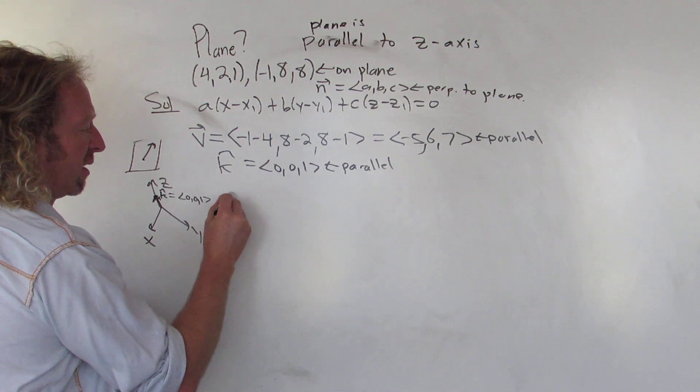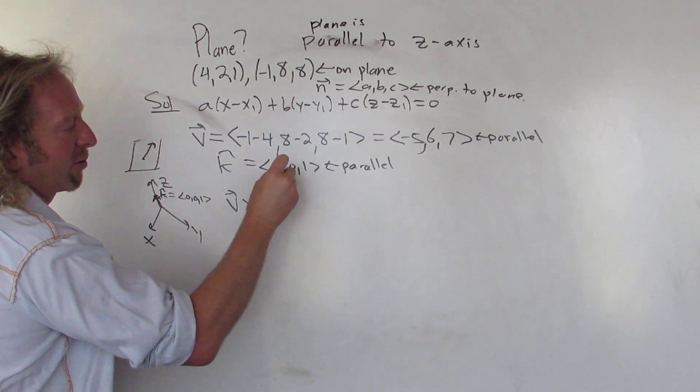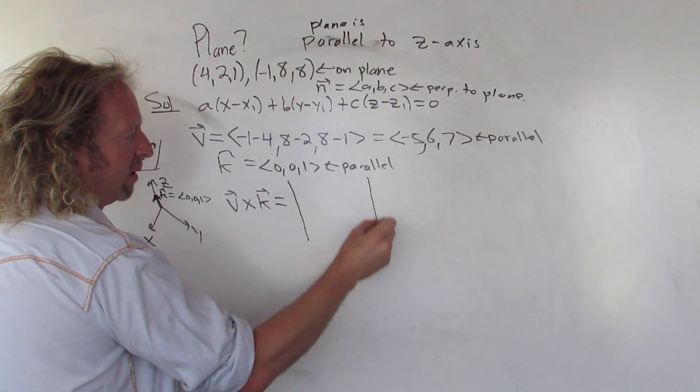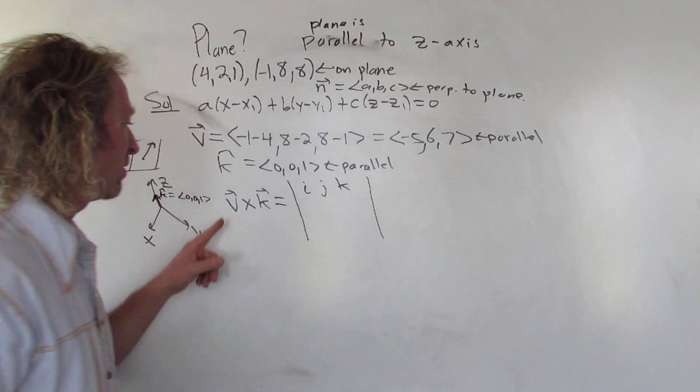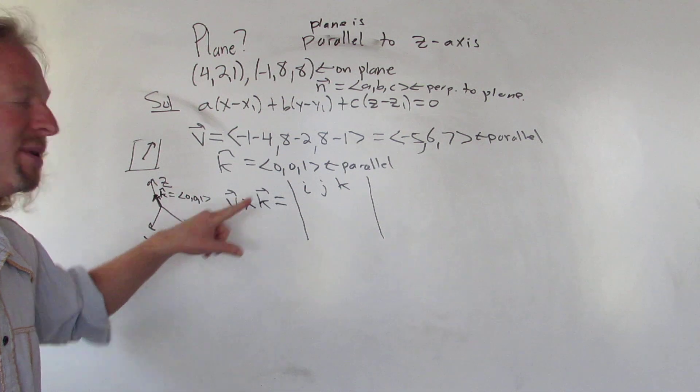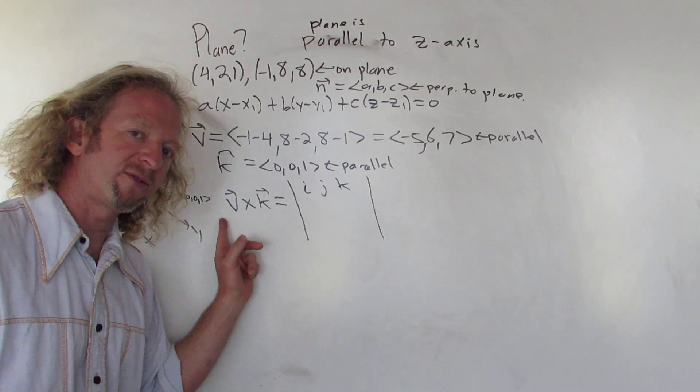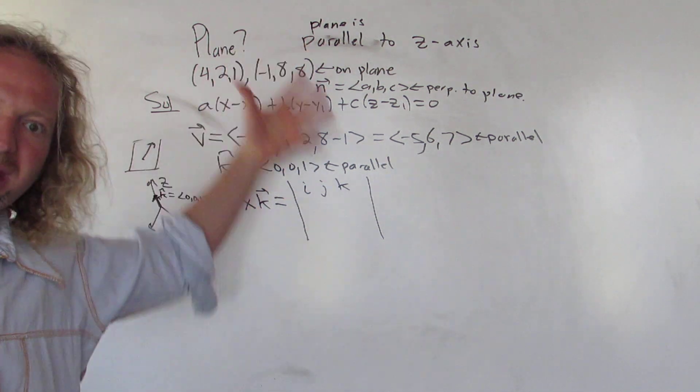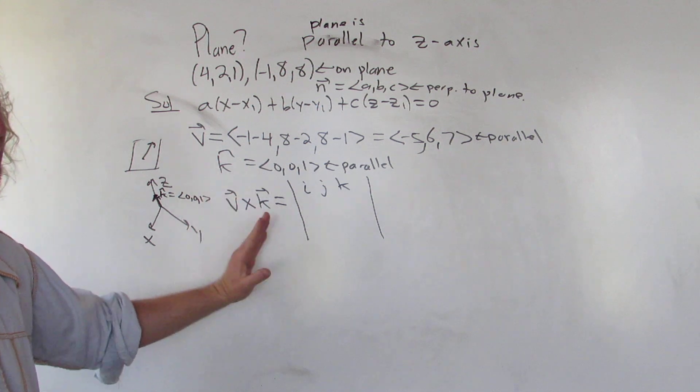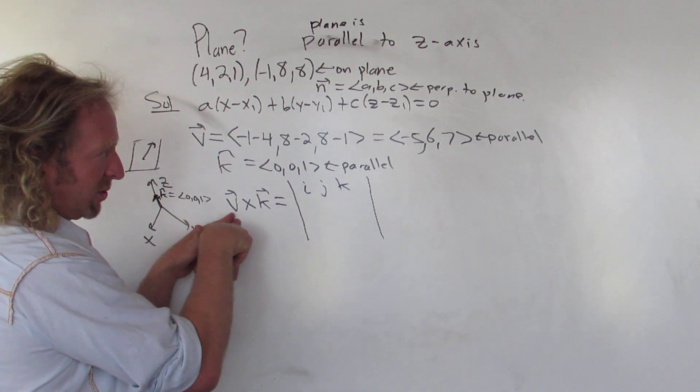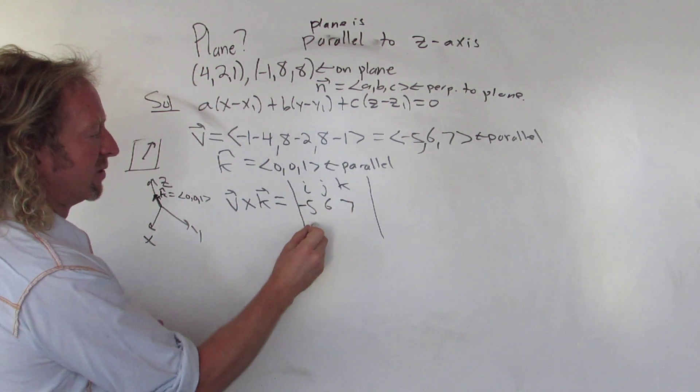So let's do v cross k. Alright, so to do cross product, you write the little determinant symbol. And in the first row, you write the i-j-k. So i-j-k. And then you write this one first, because this one came first. It doesn't matter which one you do. I mean, you're going to get a different answer. But if you do k cross v-hat, you will get a different answer slightly. The signs will change. But you'll still get the same answer at the end of the problem. So it doesn't matter if you do v cross k-hat or k-hat cross v.